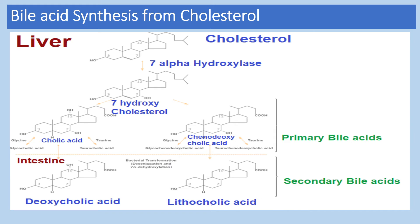Regarding conjugation of bile acids: the primary bile acids, cholic acid and chenodeoxycholic acid, are derived from cholyl-CoA and chenodeoxycholyl-CoA. These primary bile acids enter the bile as glycine and taurine conjugates — in the form of glycocholic acid and taurocholic acid — and these are formed in the hepatic cells.